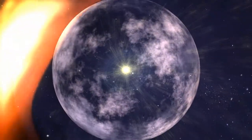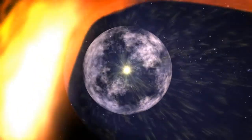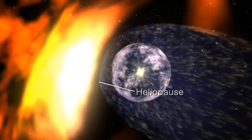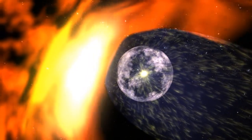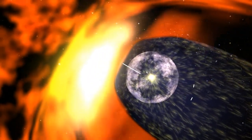The region begins with the termination shock, where the solar wind abruptly slows down. It ends with the heliopause, the boundary between the solar wind and interstellar space. Between the two is the heliosheath, a teardrop-shaped region sculpted by the pressure of the interstellar medium.